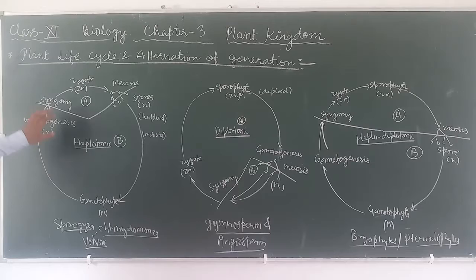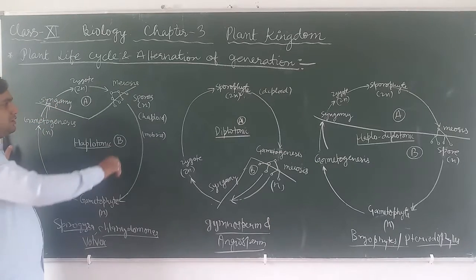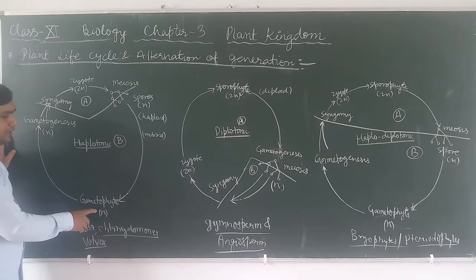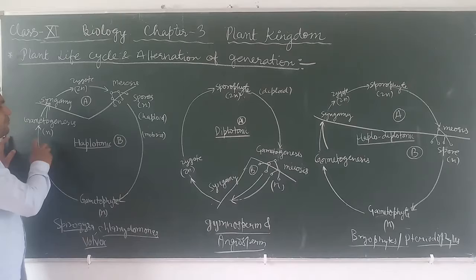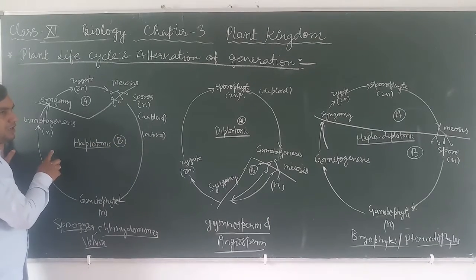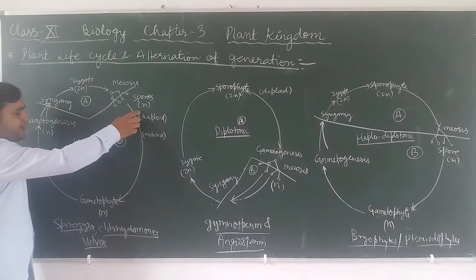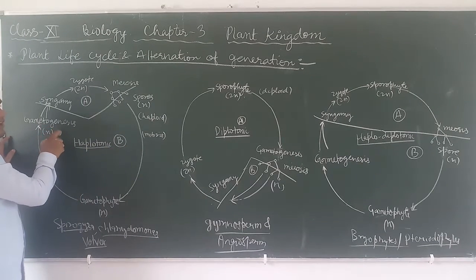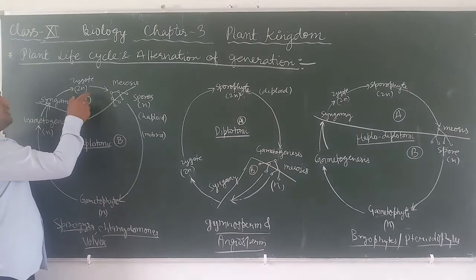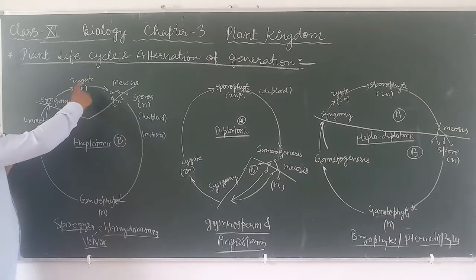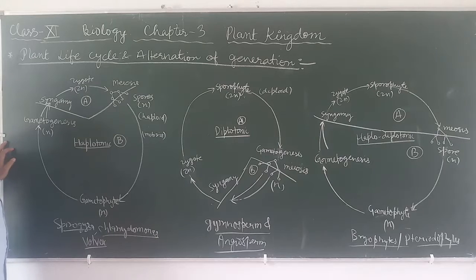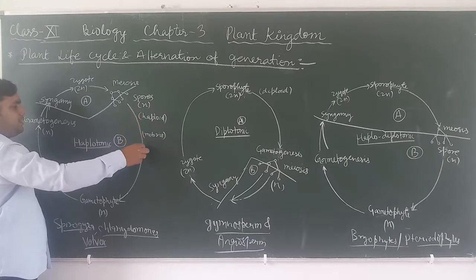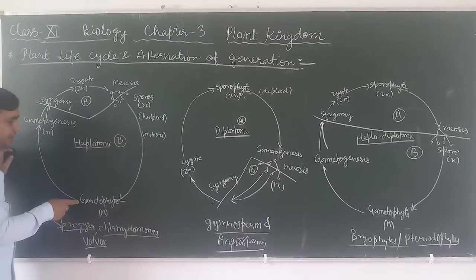The first is the haplontic pattern of life cycle. In this pattern, haploid spores develop into the gametophyte through mitosis, remaining haploid. The gametophytes come together and form a diploid zygote. Then, under meiosis, it alternates once again into the haploid stage.